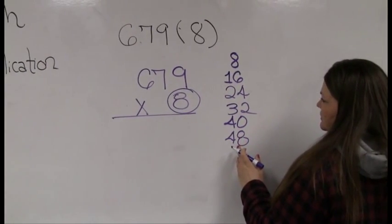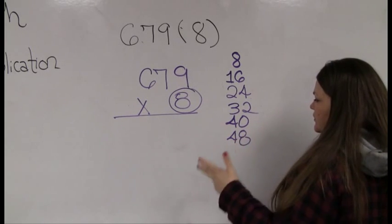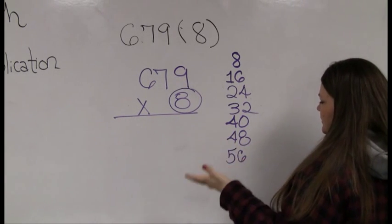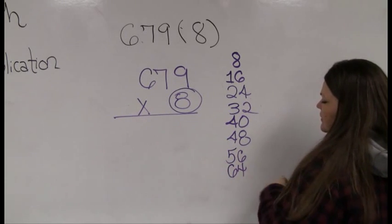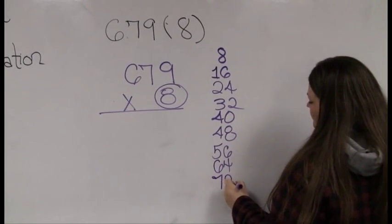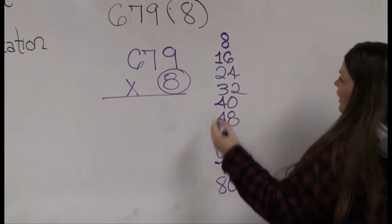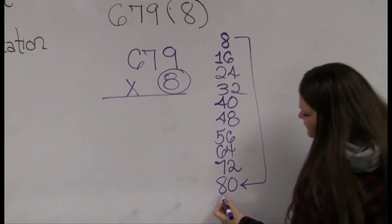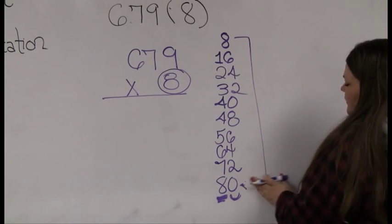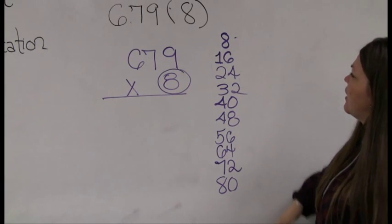Continuing to build the eight times table: 40, 48, 56, 64, 72, 80. And 80 is ten eights — notice it's just an 8 with a 0. I know I haven't gone astray because I went from 8 to 80. I don't need to go any further than that.